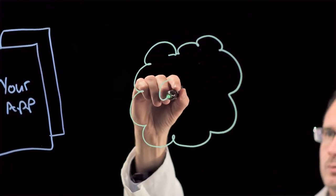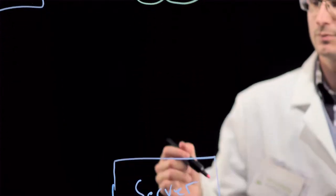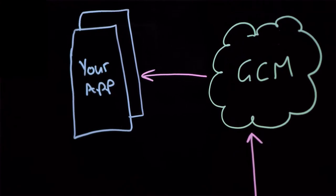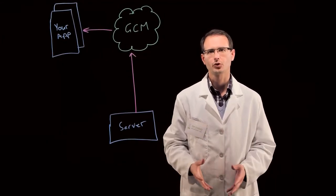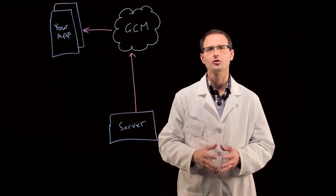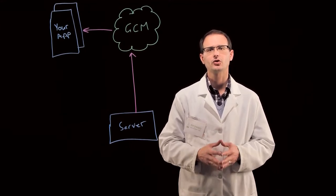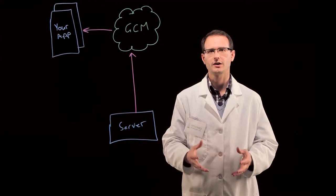Using Google Cloud Messaging, you can send messages from your server to any installed instance of your app via the Google Cloud. As a result, you can stop polling, which will immediately improve battery life and also improve the freshness of your app. And instead, rely on your server notifying clients when there's data to sync.